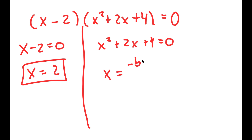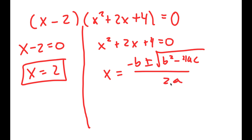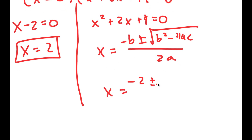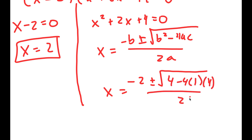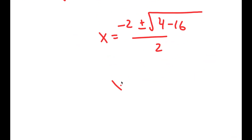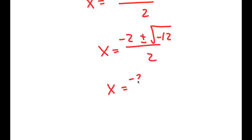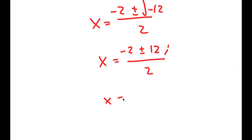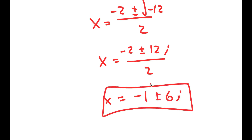To solve this, I'm going to use the quadratic formula. I get negative 2 plus or minus the square root of 4 minus 4 times 1 times 4, all over 2 times 1. This turns into negative 2 plus or minus the square root of 4 minus 16 over 2, which is equal to negative 2 plus or minus the square root of negative 12 over 2, which is equal to negative 2 plus or minus 2i√3 over 2, which is equal to negative 1 plus or minus i√3. So these are the two more solutions to this equation.